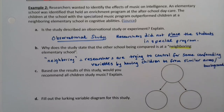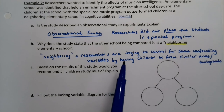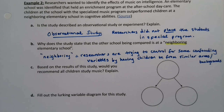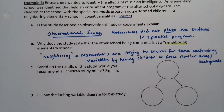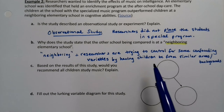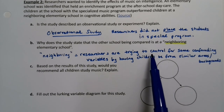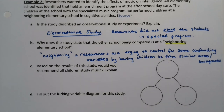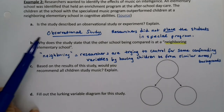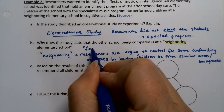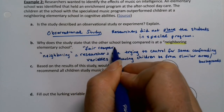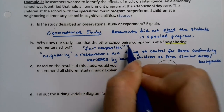They're trying to control for some of the confounding variables by having children from similar areas and backgrounds. By control there I mean the scientific definition — the researchers are setting it up so that hopefully we'll be able to compare these two groups. They're not actually manipulating it because they don't have control over it. They're trying to make it so there's a fair comparison. However, it's not really a fair comparison, and we'll see why in a second.